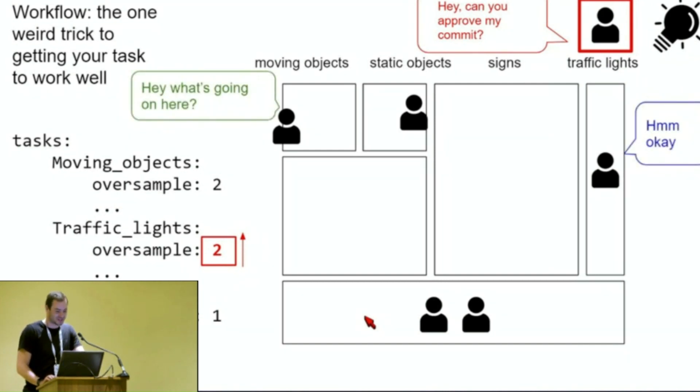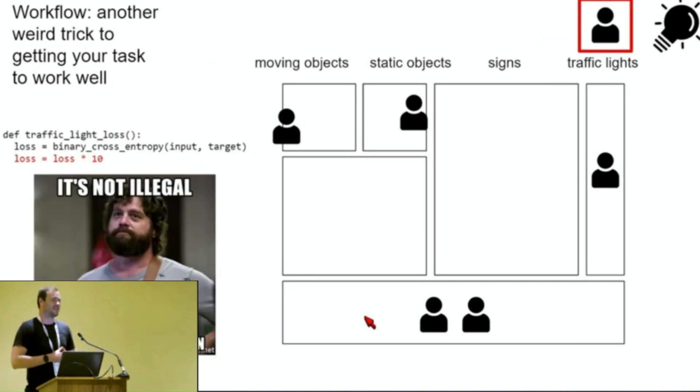And that means your network will work better on your traffic lights task. And then you say, hey, can you approve my commit? And a random person says, okay. And moving objects person gets upset. What's going on here? Because their task will be starved of resources. I mean, the higher point being that there's finite capacity to go around. And a lot of people are trying to simultaneously get their task to work well. But there are many okay ways of doing that. And some of them cause political drama, I would say, in the team.